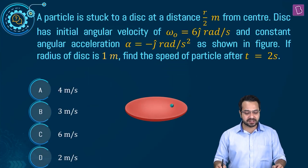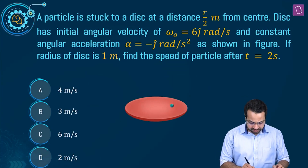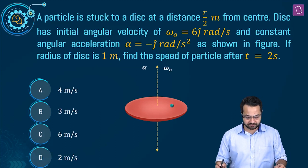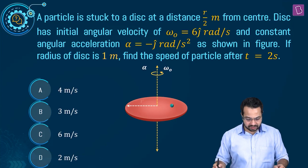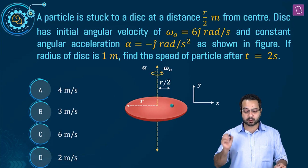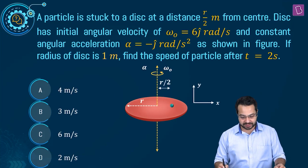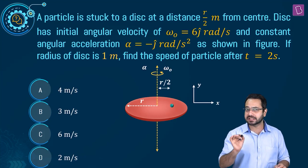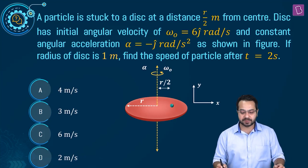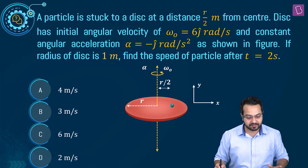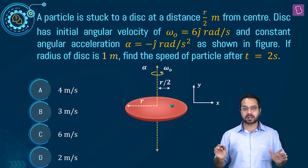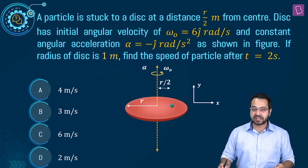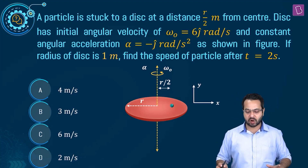The question is: a particle is stuck to a disk at a distance r/2 from the center. The disk has initial angular velocity omega naught equal to 6j radian per second and constant angular acceleration alpha equal to minus j radian per second squared, as shown in the figure. If the radius of the disk is 1 meter, find the speed of the particle after t equal to 2 seconds.